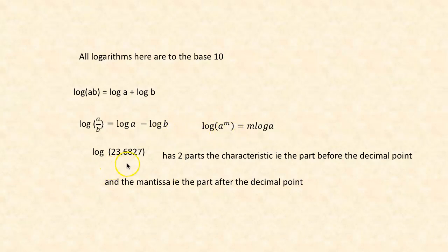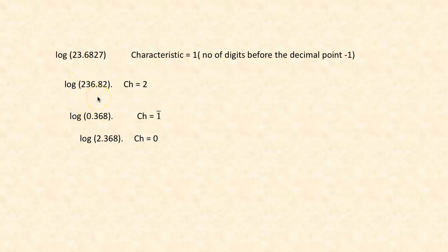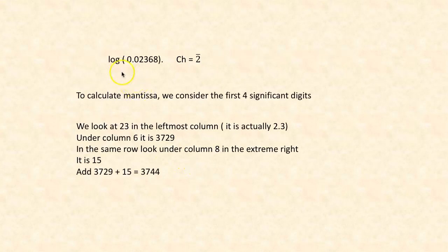To calculate log 23.6827, there are two parts: the characteristic, which is the part before the decimal point, and the mantissa, which is the part after the decimal point. For log 23.6827, the characteristic is 1 — there are two digits before the decimal point, so 2 minus 1 is 1. For log 236.82 the characteristic is 2. For log 0.368, the characteristic is 0 minus 1, that is bar 1. For log 2.368, the characteristic is 1 minus 1, which is 0. For log 0.02368, the characteristic is bar 2.